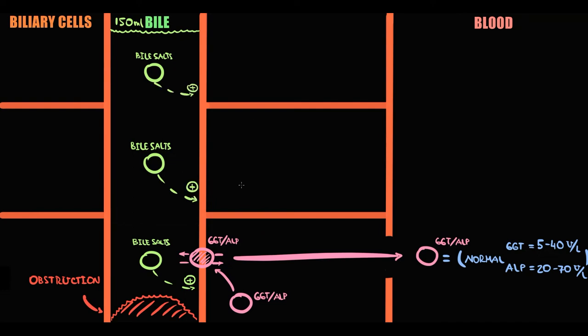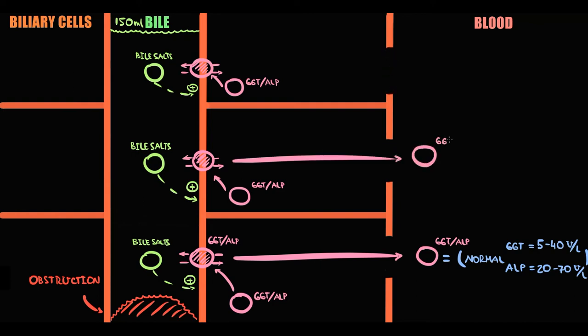In response to this, biliary cells produce more GGT and ALP. Then both these enzymes are delivered to the cellular surface where they provide transportation of metabolites across the cellular membrane. And in this case, with cellular turnover, instead of one molecule of GGT and ALP, biliary tract will release into the blood three molecules.